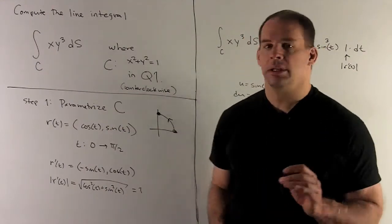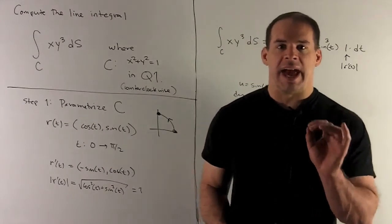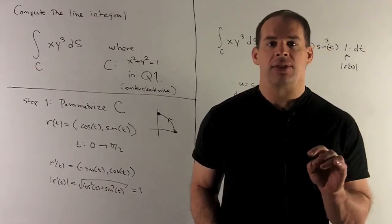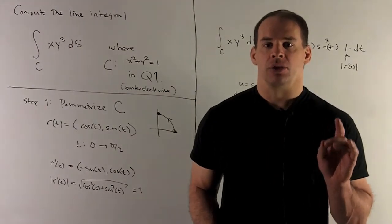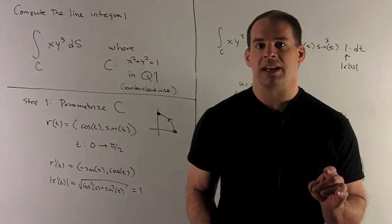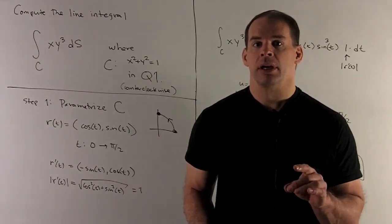Next to get ds, I'm going to need the length of the derivative of our function. So what do we do? I'm going to take the derivative, so it's going to be minus sine comma cosine. Sum of squares, I get a one.